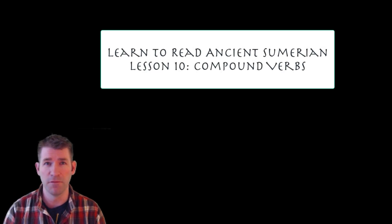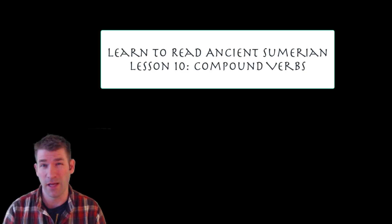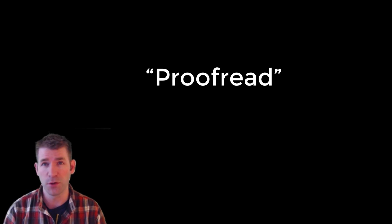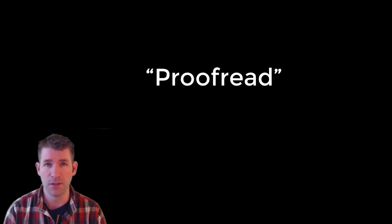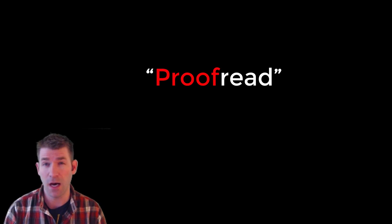Sometimes in English, we find that forming a verb with a single word is not enough to say exactly what we mean. In these cases, we often add another word to the verb, like an adjective, adverb, or even a noun, to complement the verb. For example, when I complete the draft of my Learn to Read Sumerian book, I will give it to someone — my brilliant wife — to read and to edit. That person will proofread my manuscript. The word 'read' is not enough to specify what that person will do with my manuscript. Because a preliminary or trial version of a document is known as a proof, we add the word 'proof' to the verb 'read' to make a type of compound verb.